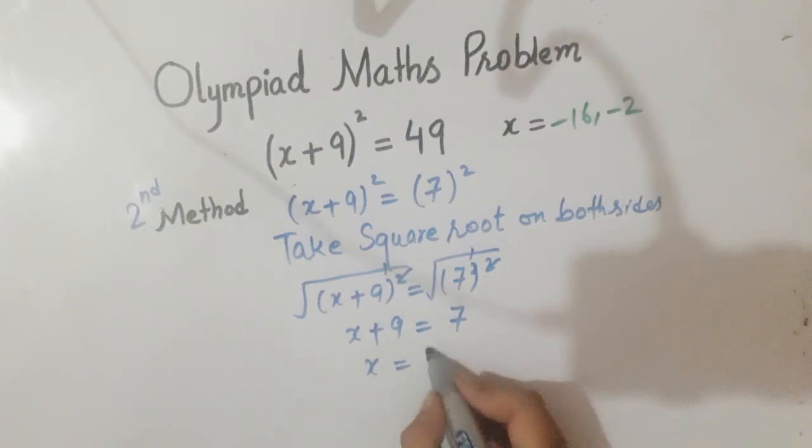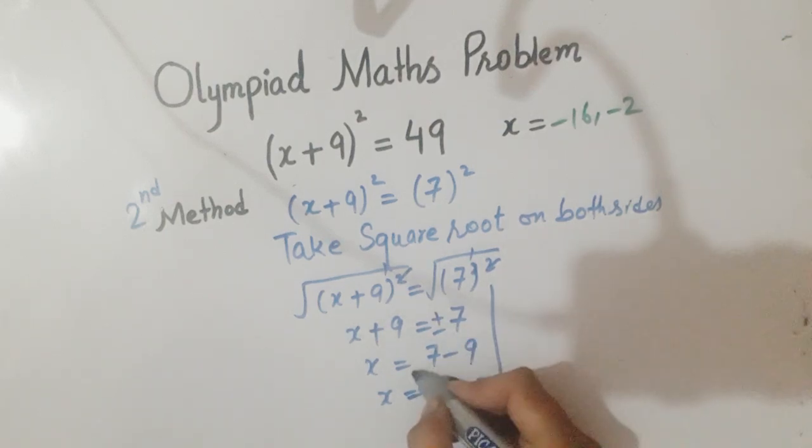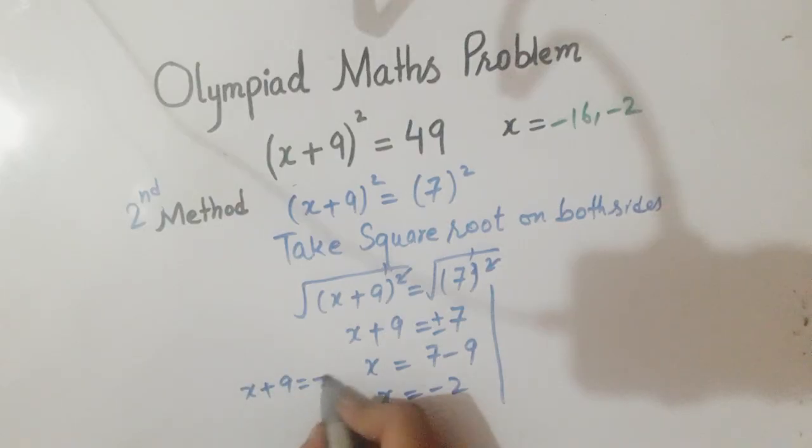So x = 7 - 9, x = -2. And here we get plus or minus 7, so we take x + 9 = +7.